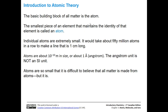Individual atoms are extremely small — about 10 to the negative 10 meters in size. That's also called an angstrom, a unit used in chemistry a lot, although it's not an official SI unit. Individual atoms are so small it would take about 50 million of them in a row to make a line about a centimeter long. It's difficult to believe that all matter is made up from them, but it is.